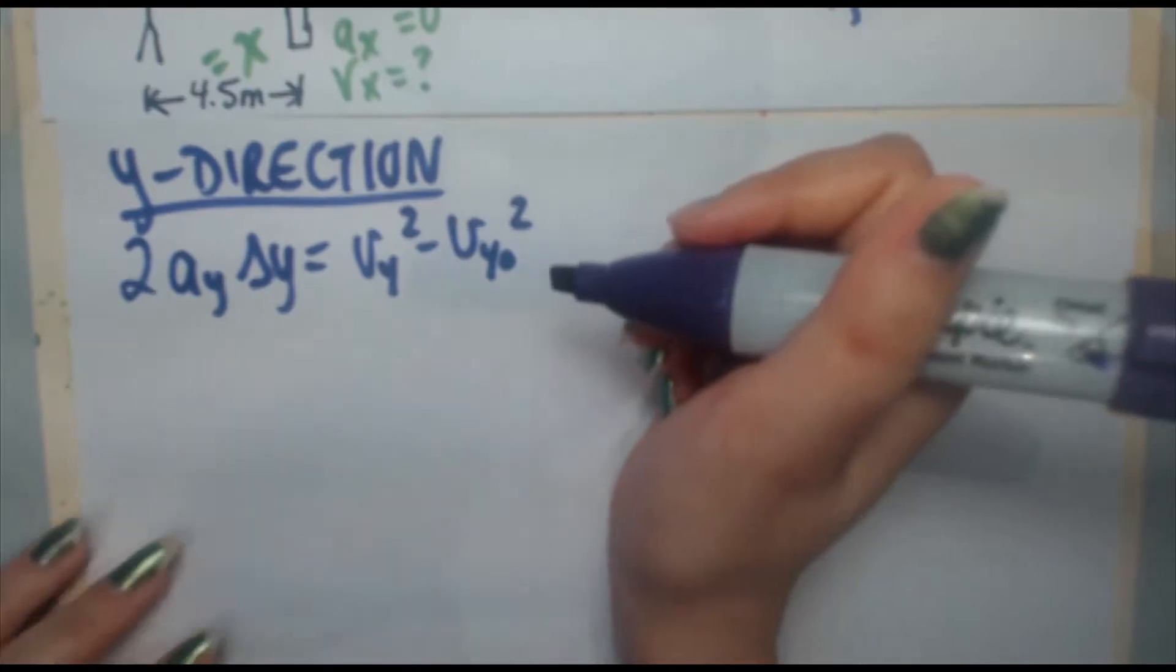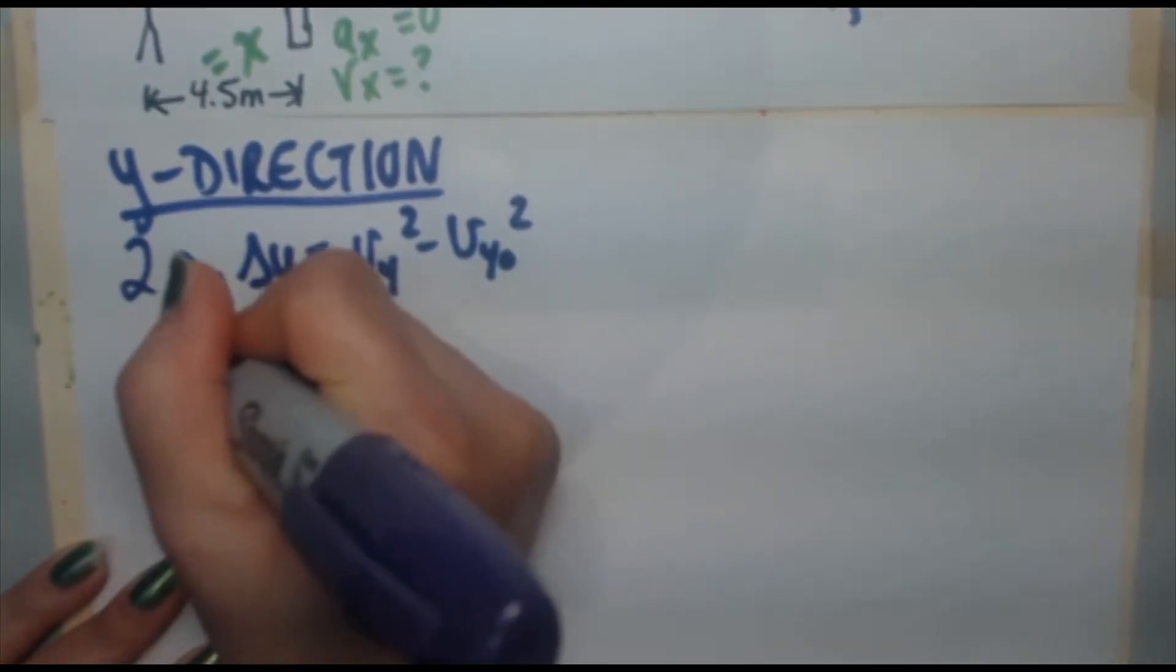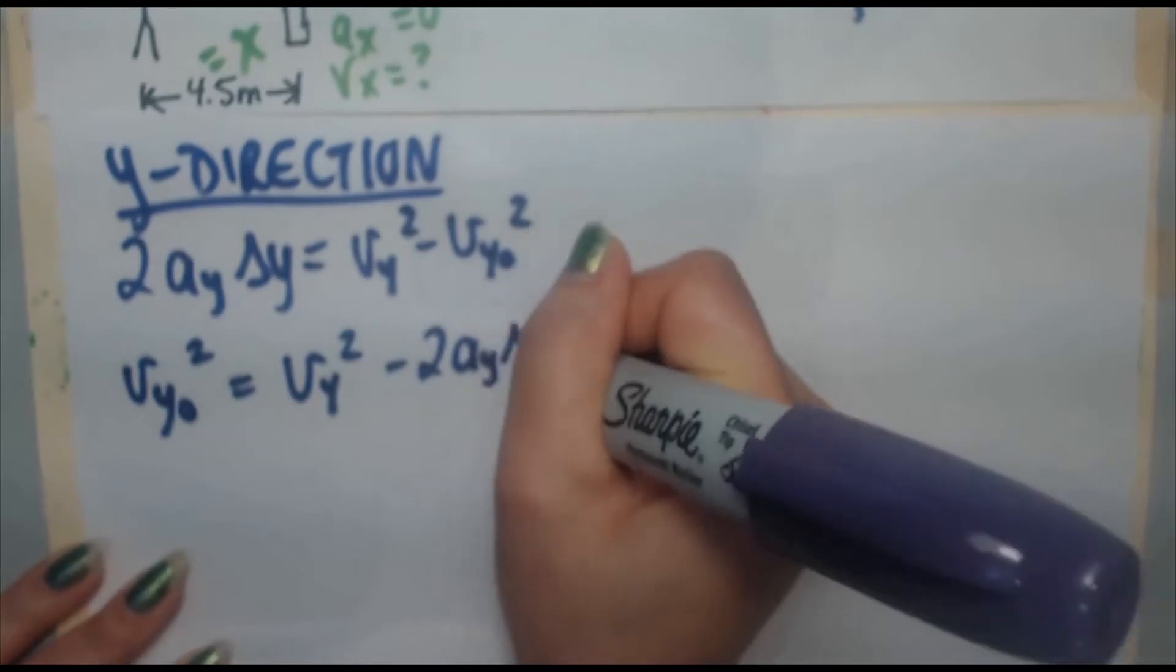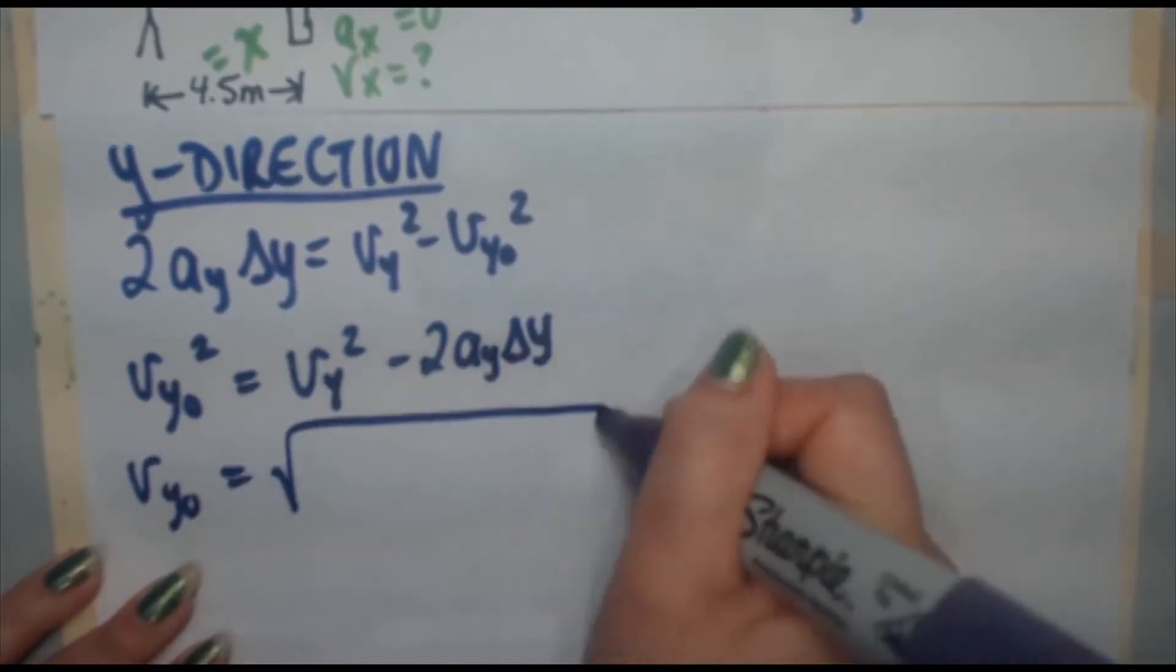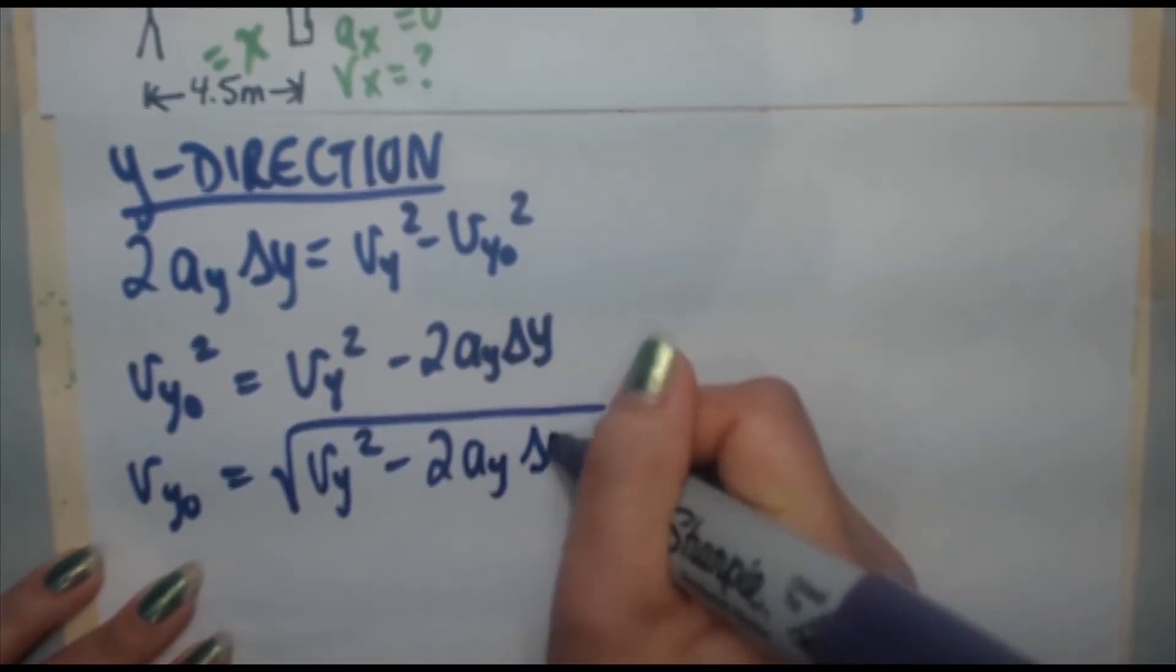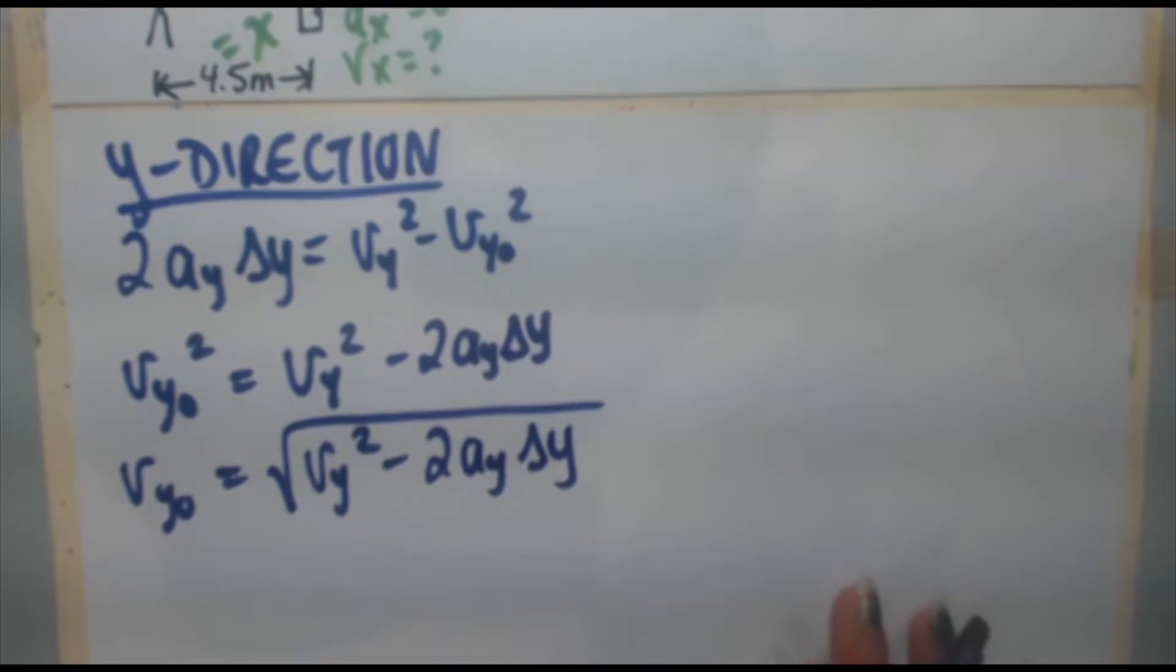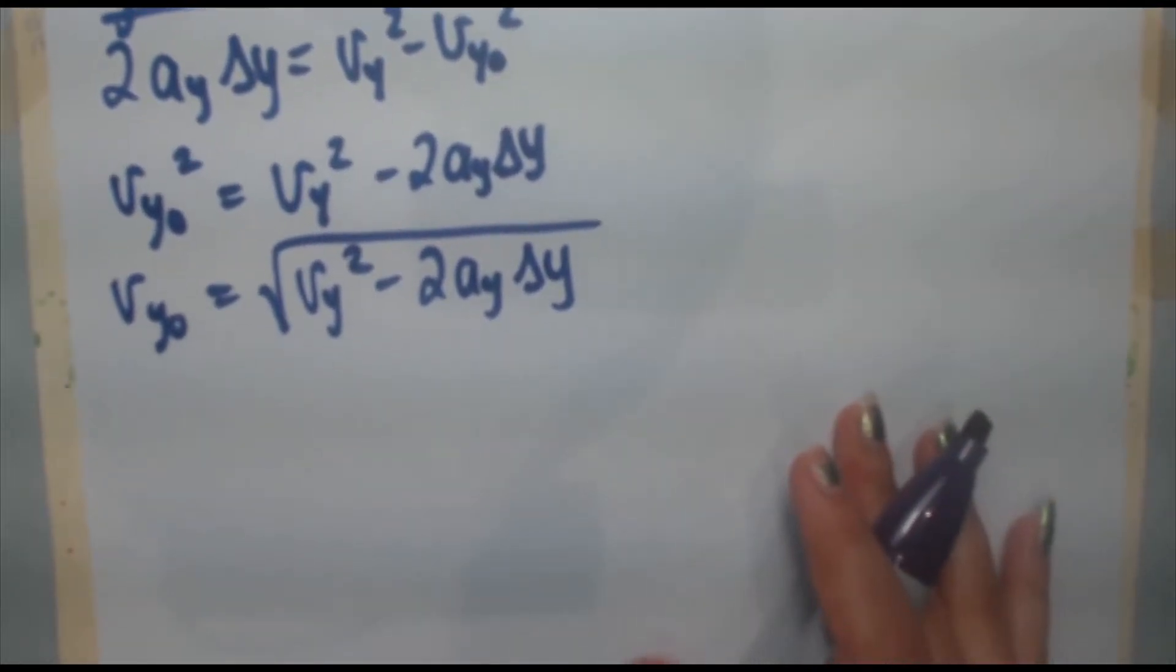Rearranging this formula for vy₀, we're going to get vy₀² = vy² - 2ayΔy. Take the square root of both sides. vy₀ = √(vy² - 2ayΔy). Like I mentioned in the previous video, good practice when solving physics problems: always simplify the expression first before plugging your numbers in. It makes things a lot easier.